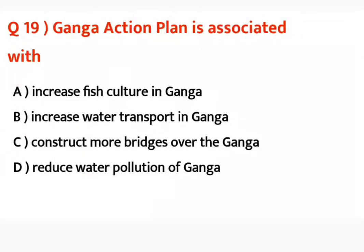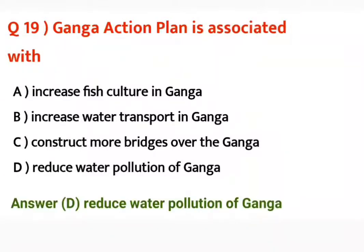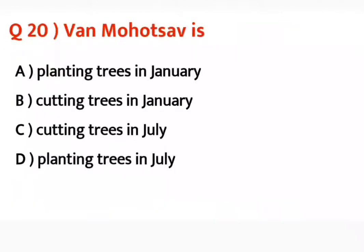Question number nineteen: Ganga action plan is associated with? Ganga action plan 1985 mein launch kia gaya tha. It is associated with reducing water pollution of the Ganga. Ganga jo pollute ho chuki hai, us ki pollution level ko kum karne ke liye yeh plan launch kia gaya.